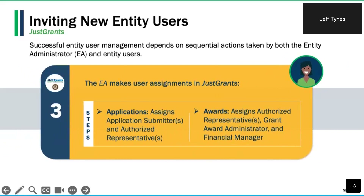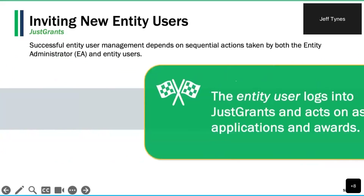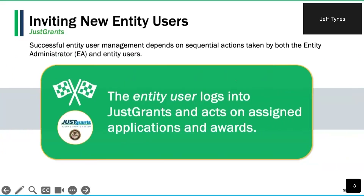After entity users have logged into JustGrants for the first time, their accounts become active, and the entity administrator can begin making user assignments. Your entity administrator can assign applications to one or two authorized representatives and up to three application submitters. Entity admins can also assign awards to one or two authorized representatives, one grant award administrator, and one financial manager. After assignments are made, entity users can log in and begin taking action on their assigned applications and awards.